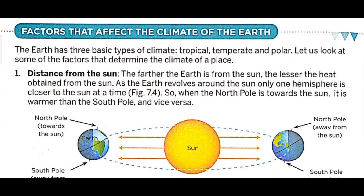The first topic is distance from the sun. The further the earth is from the sun, the lesser the heat obtained from the sun.